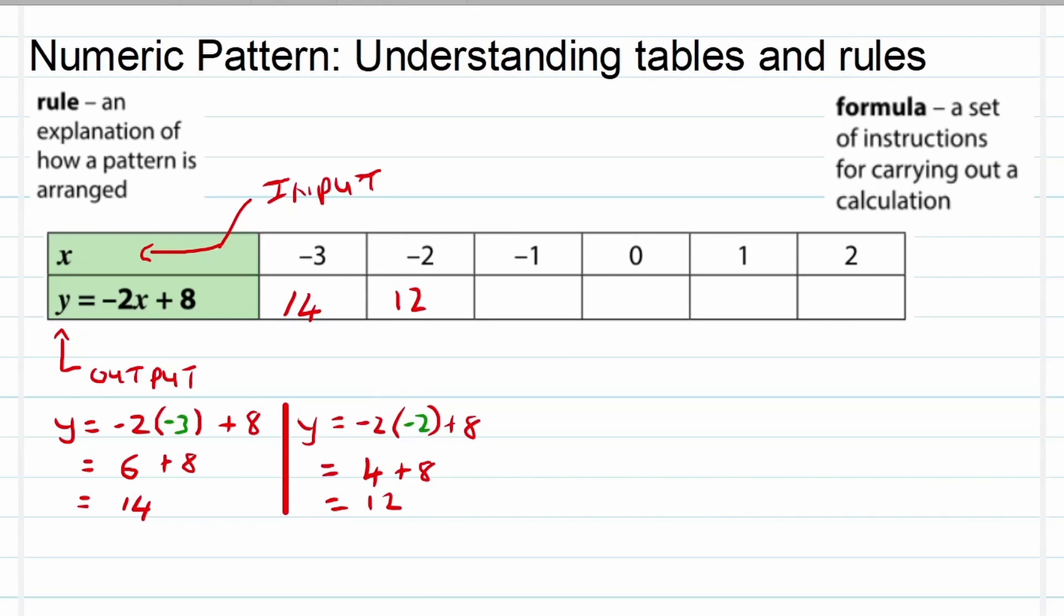Let's go for the next input value of -1. So y equals -2 times the input value plus 8. In this case the input value is -1, that means it will give us a positive 2 plus 8, and we'll have an answer of 10. There we go, we're making good progress here. Output value of 10.